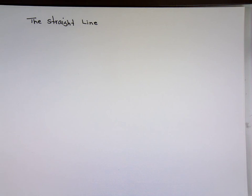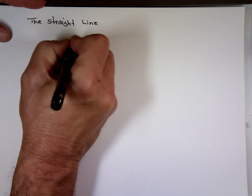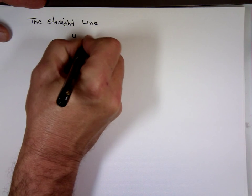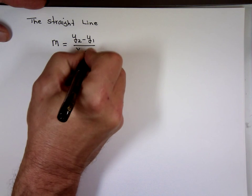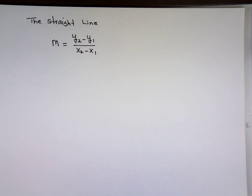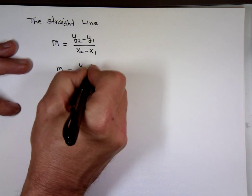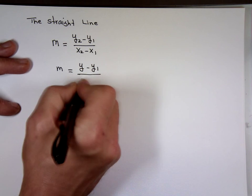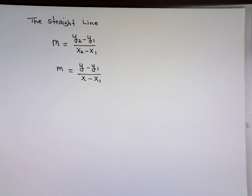I'm going to derive the equation for the straight line. The definition of slope is y2 minus y1 over x2 minus x1. The reason I call them y2 and y1 is because you have two points. But I could have called it y minus y sub 1 and x minus x sub 1. I'll call one of them point 1 and the other just point with no number. That's the same thing.